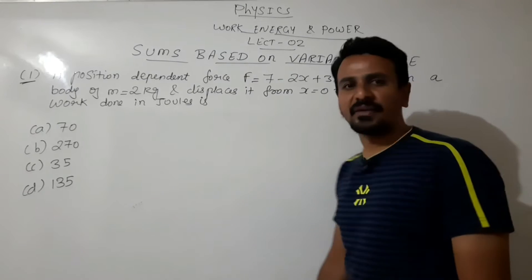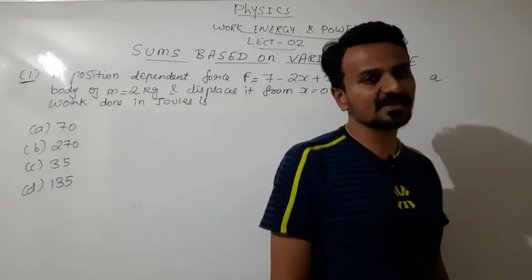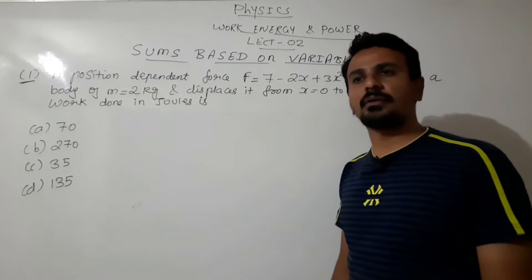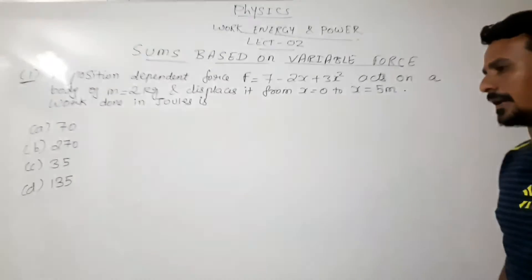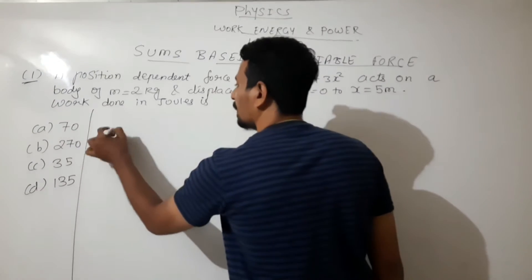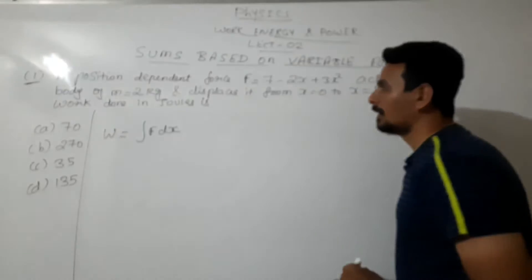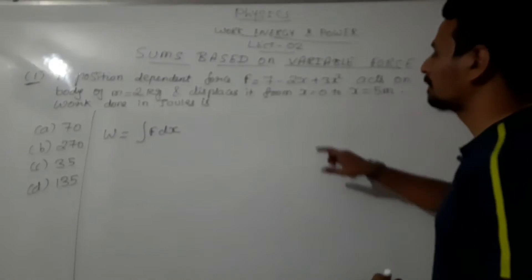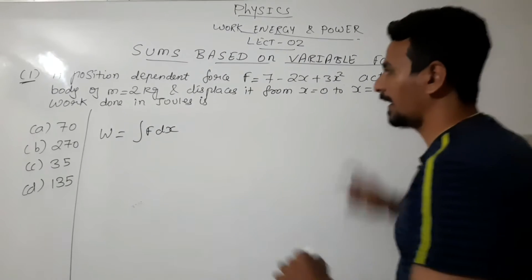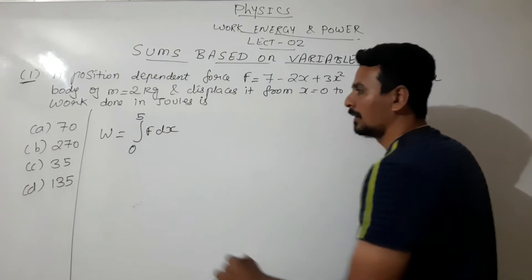In the previous video we had seen that whenever the force is variable and you have been asked to calculate the work done, we will go by using integration. So work done will be integration F into dx. Now how to set the limit? The body is getting displaced from 0 to 5, so the lower limit would be 0 and upper limit will be 5.